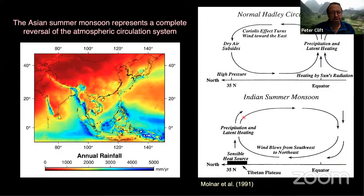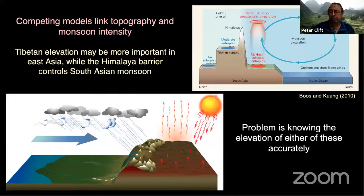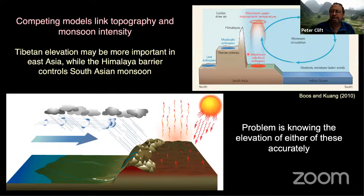In the summertime we have a reversal, with heating in the mid-latitudes and descending air in equatorial regions. For many years it was suggested that heating over the Tibetan Plateau is the critical feature — the warm air rises due to the sun's heating of the surface, generating a low-pressure system. But we now know that potentially, at least in the South Asian monsoon, the heights of the Himalaya themselves may be the critical feature, with heating over the Indo-Gangetic Plain in particular.